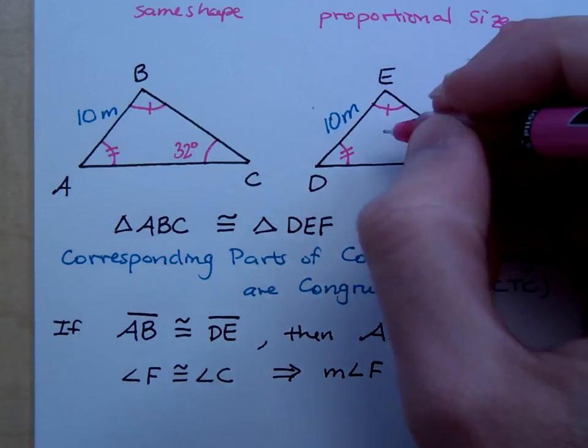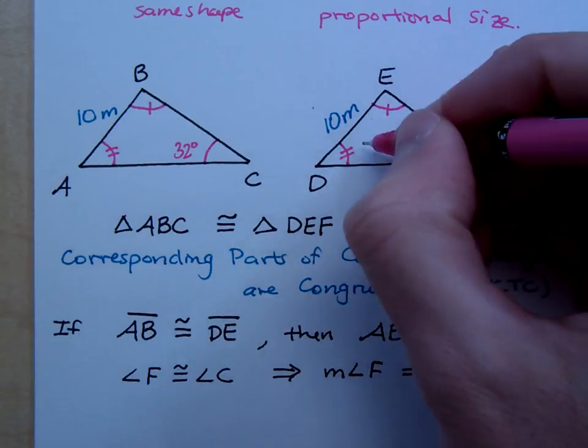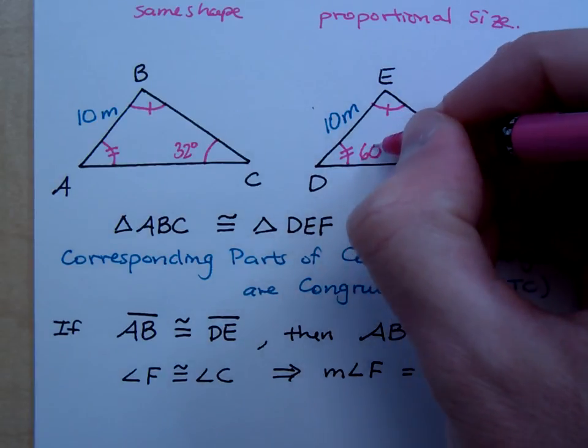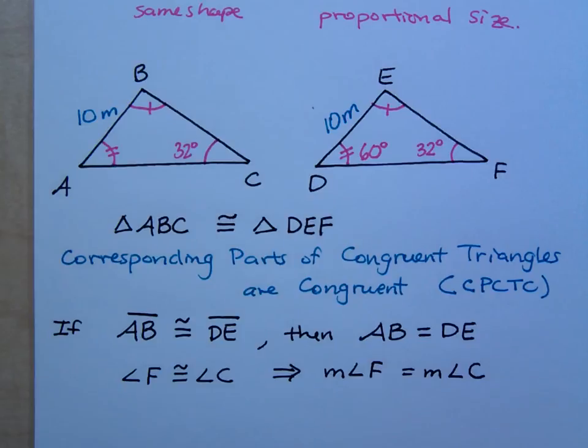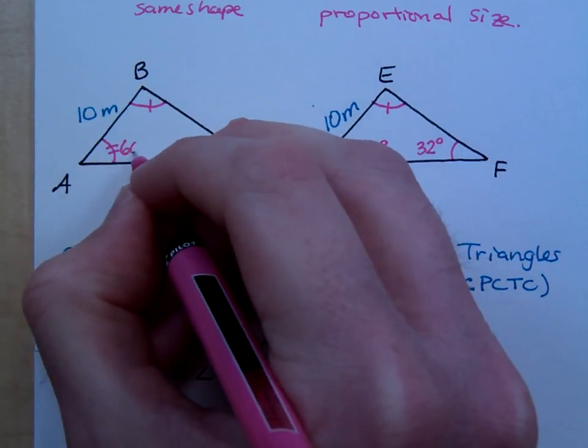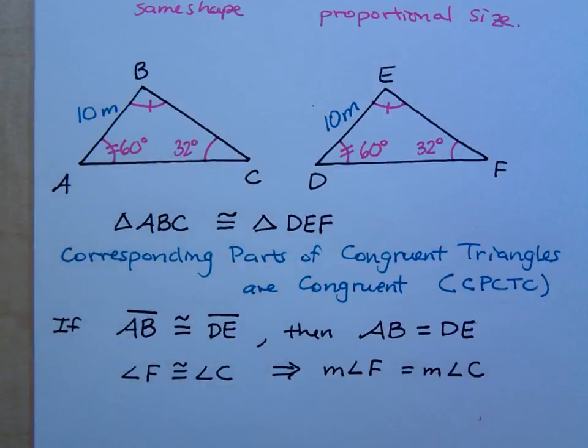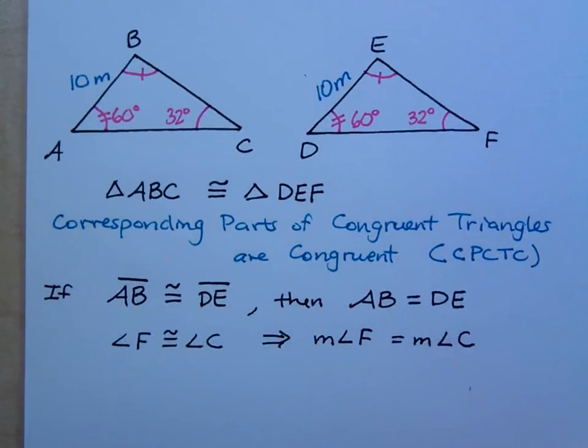So, if I say that the measure of angle D is 60 degrees, what's the measure of angle A? It's also going to be 60 degrees. Then my question to you is this, what's the measure of angle E?